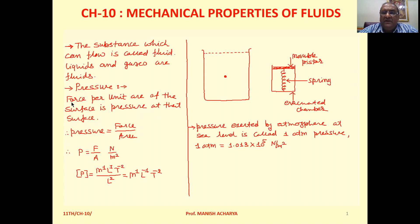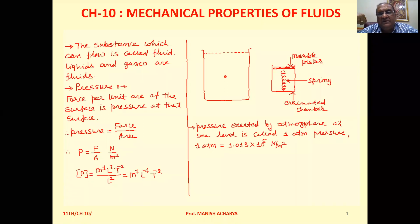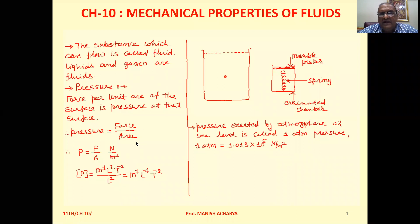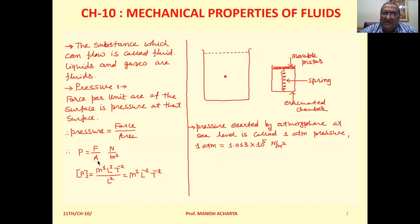When we consider the force acting on the surface, we consider the force acting normal to the surface. Pressure P is F by A, where A is the area of the surface on which the force is acting normal to it. The unit of force is Newton and area is meter square, so the unit of pressure is Newton per meter square, also called Pascal.